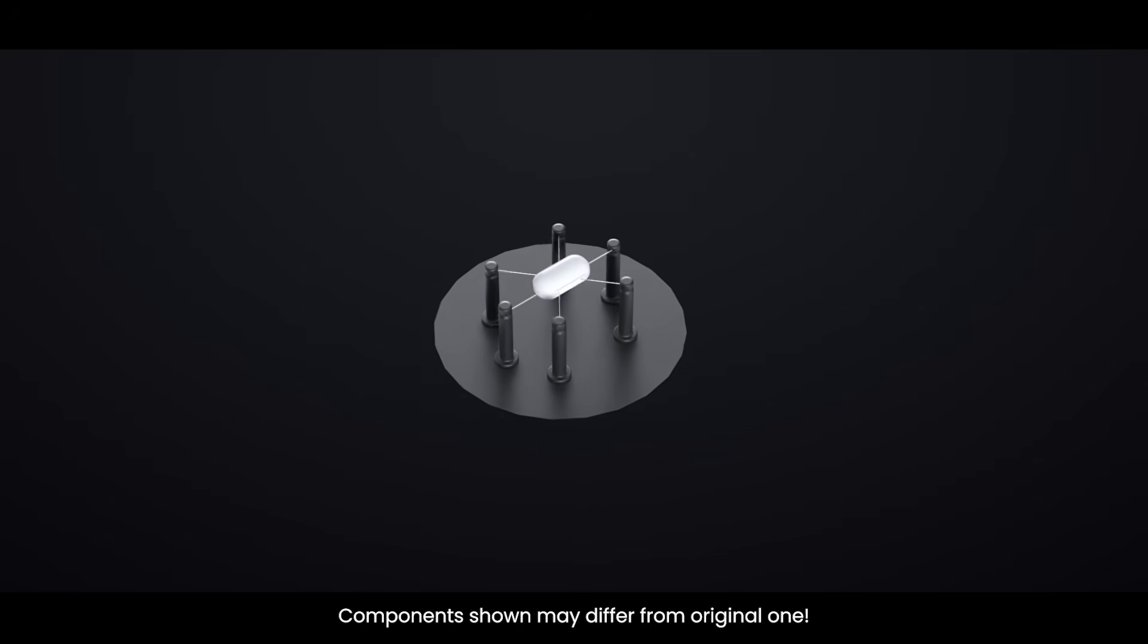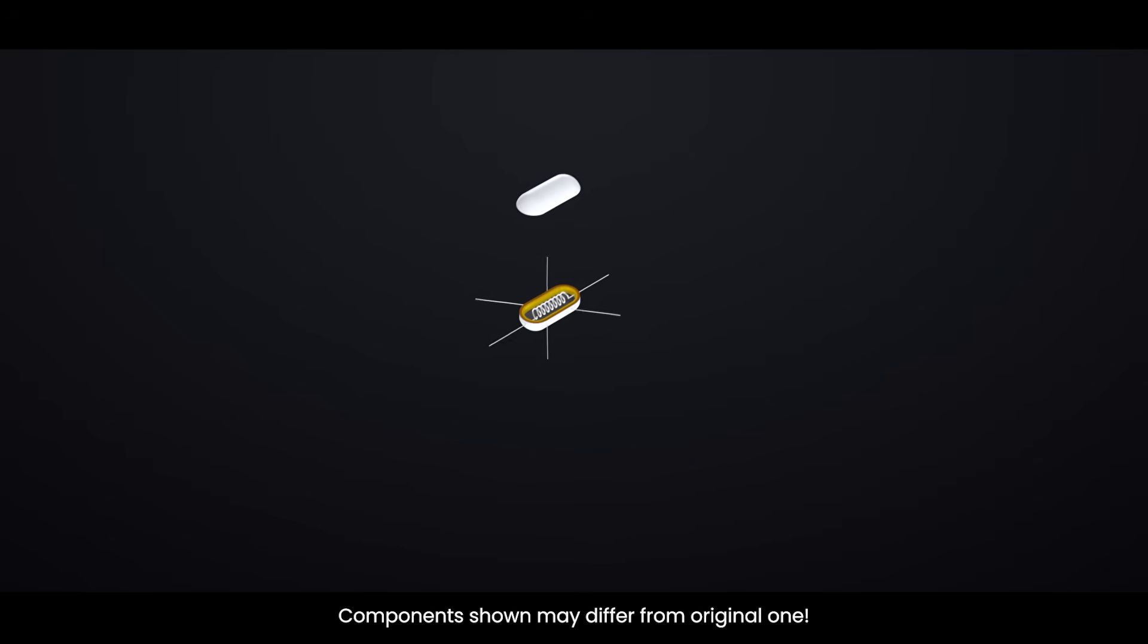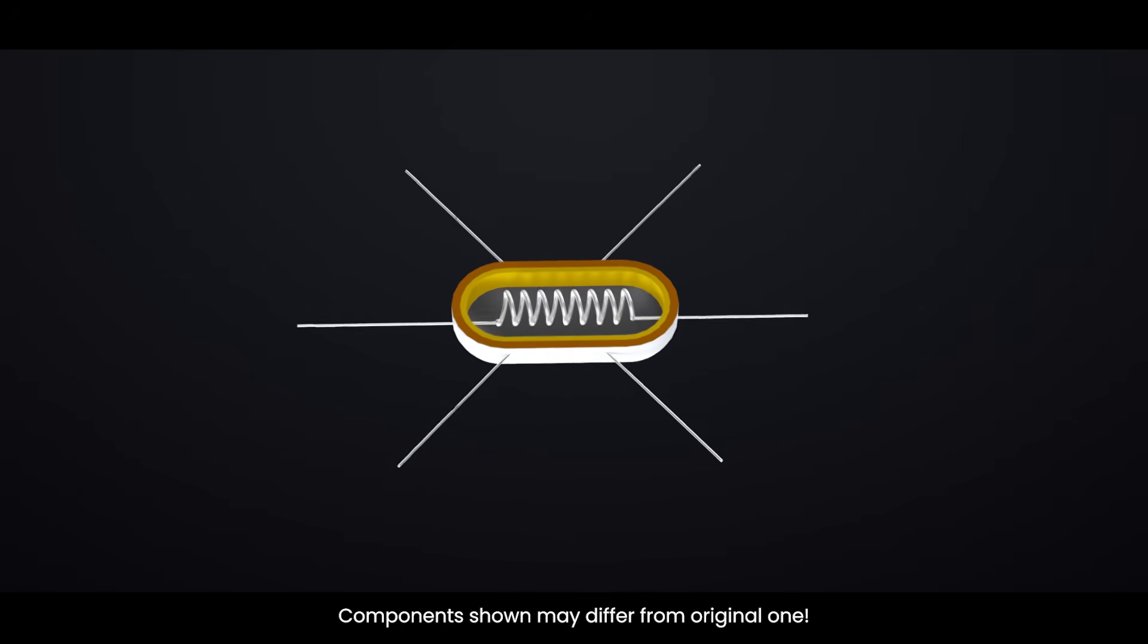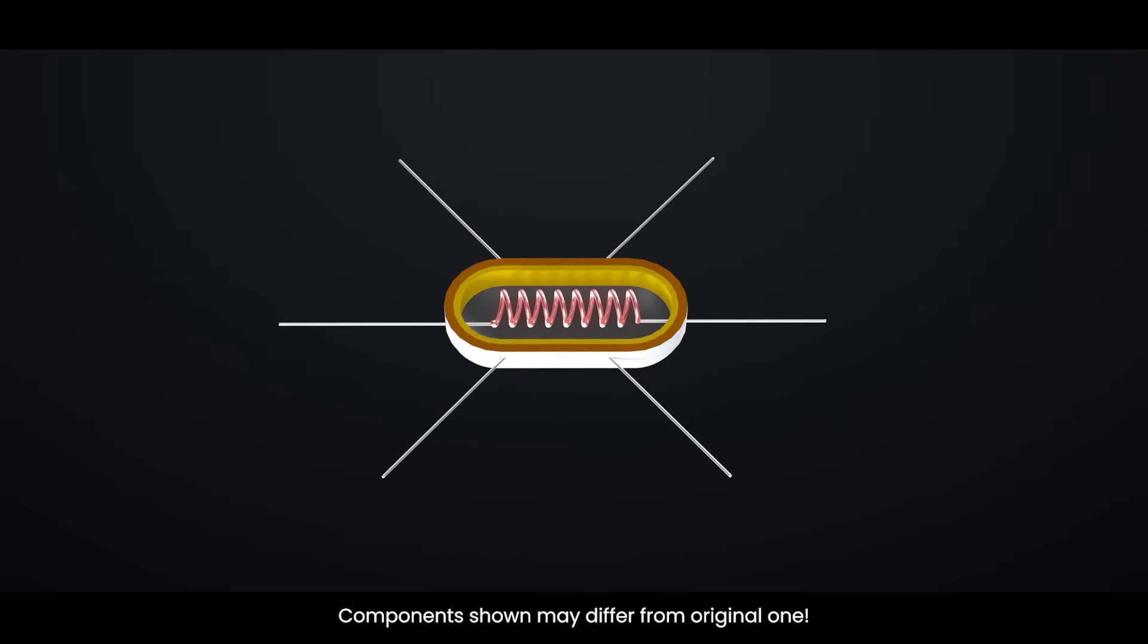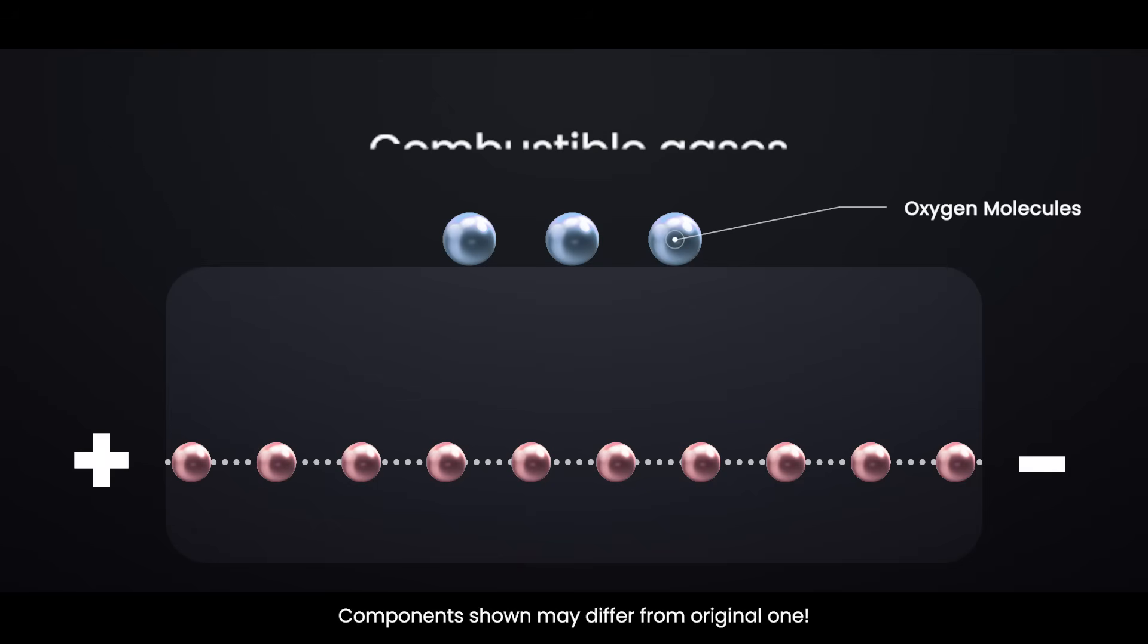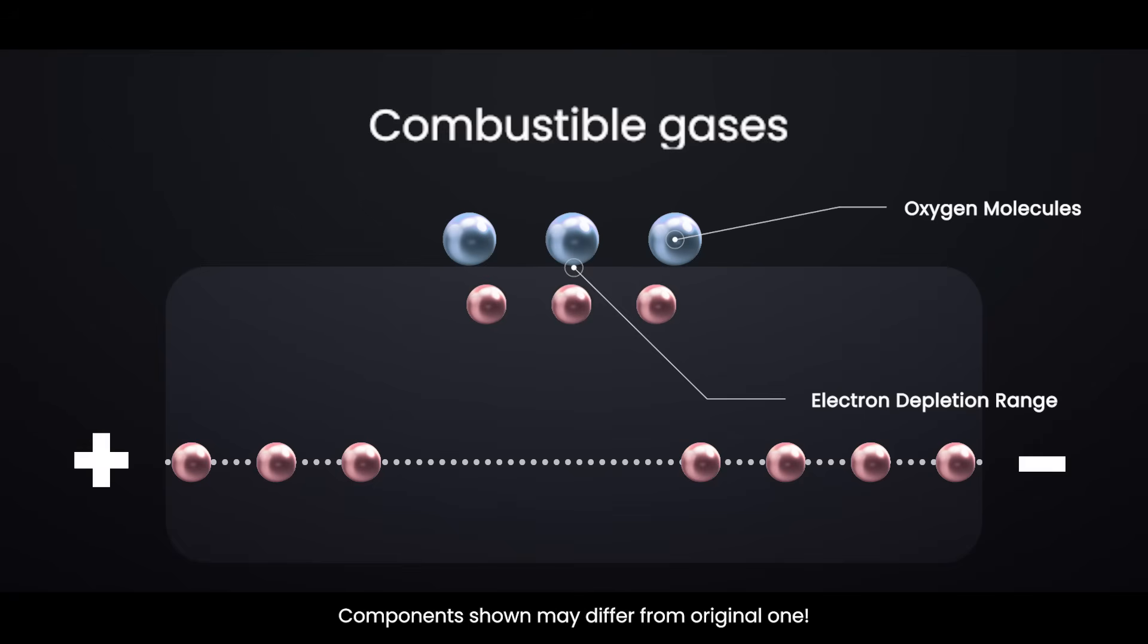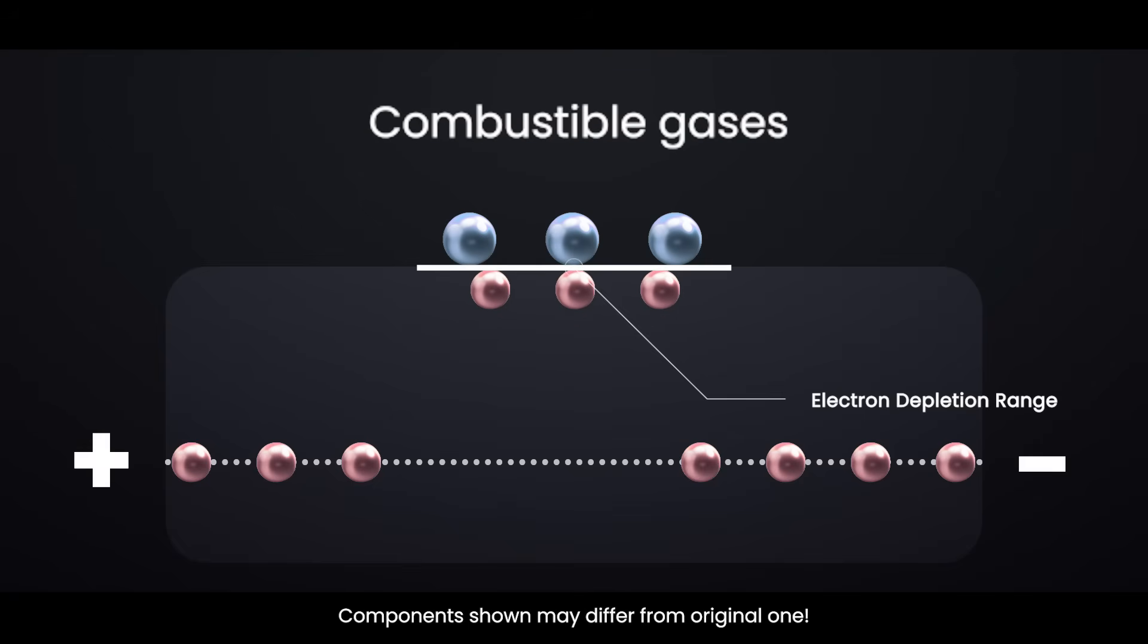How does a gas sensor work? When you turn on an MQ2 gas sensor, it starts heating up its internal tin dioxide semiconductor layer to a high temperature. At this high temperature, oxygen molecules from the air stick to the surface of the tin dioxide. These adsorbed oxygen molecules pull free electrons away from the tin dioxide, which creates an electron depletion region near the surface. This makes the tin dioxide highly resistant to electrical flow, so only a small amount of electric current can pass through it.